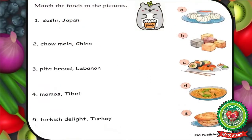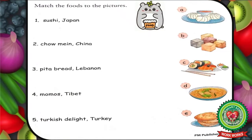Now we will start with our exercise part. So put your pencil here. Match the foods to their pictures. In this exercise, pictures of foods are given and their names are also given along with the countries. We have to match the pictures of the foods with their respective names. But before starting this exercise, we will discuss these foods one by one.